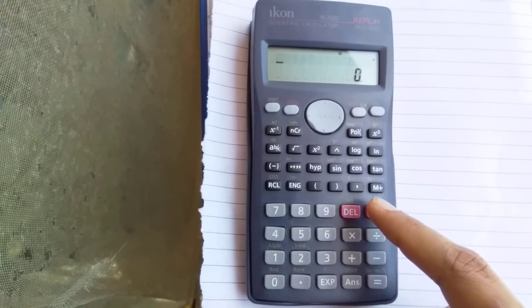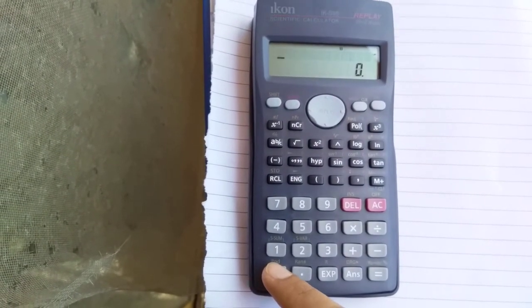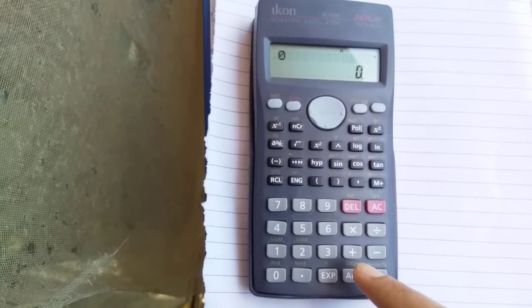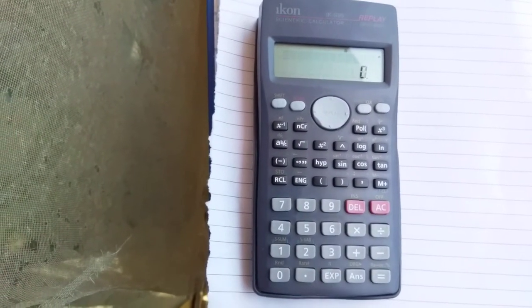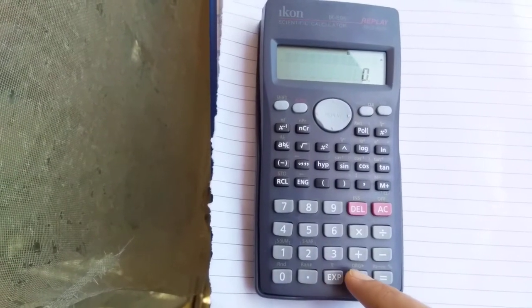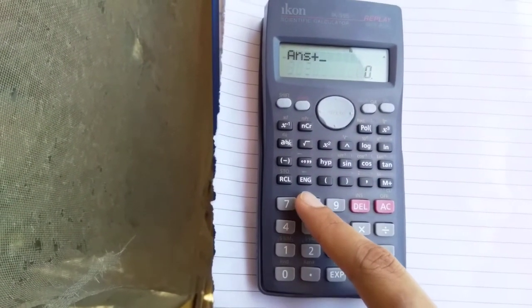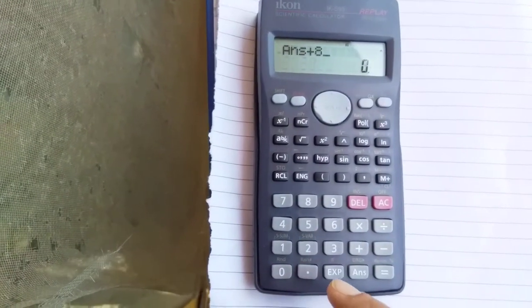Let me show you another value. For example, you have to go again 0, and then press equal to clear all previous memory, then press AC. Then start again: ANS plus - you want to calculate for example multiplication table for 8.